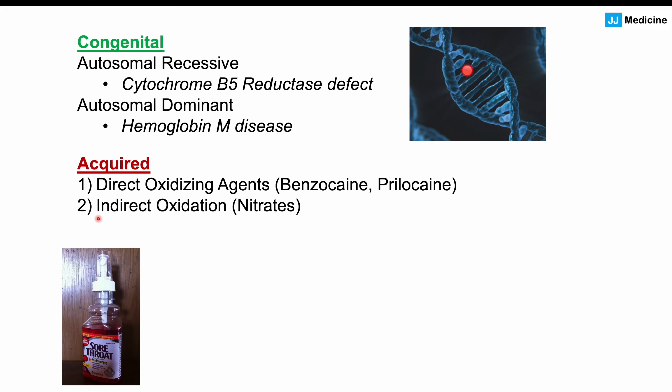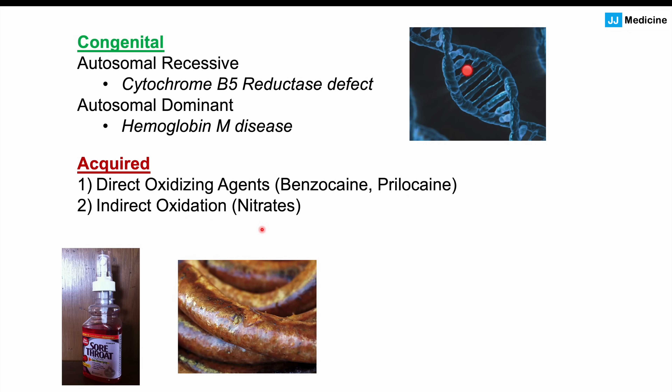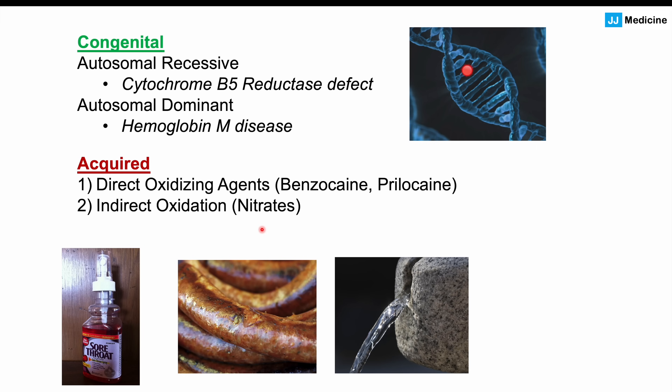Other causes of acquired methemoglobinemia include indirect oxidation through nitrate exposure — in particular foods like processed foods such as sausages and hot dogs, as well as smoked foods. We can also find this in contaminated water sources, especially private wells. Well water can be contaminated with nitrates, and this is especially important in young children, who can increase their methemoglobin levels quite quickly if they're drinking a lot of this water.